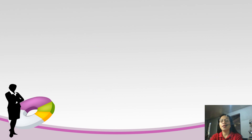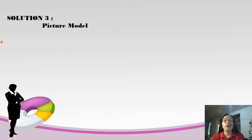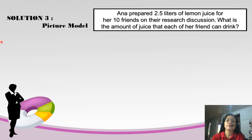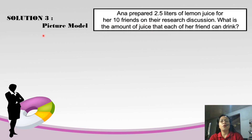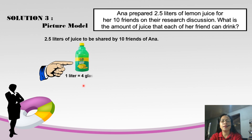Each friend will only receive one-fourth liter or 1 glass of juice. Let's proceed to the third solution — the picture model. Using the same problem: Anna prepared 2.5 liters of lemon juice to be divided by her 10 friends. In the picture model, we use pictures to present the solution in order to arrive at the correct answer. The data given is 2.5 liters of juice to be shared by 10 friends of Anna.